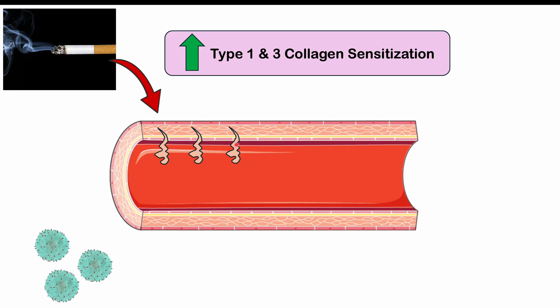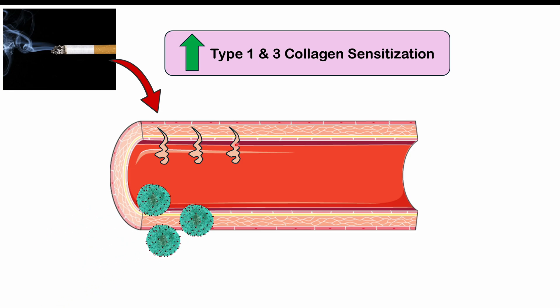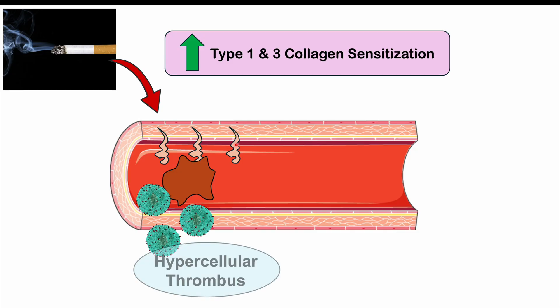In Buerger's disease, this endothelial damage is going to lead to an immune response. We're going to get a recruitment of T cells and other immune cells coming into the area and causing inflammation. This is all going to lead to a thrombus forming — a clot. These clots are not normal; they're going to be a large ball of cells, what we call hypercellular thrombi, composed of multinucleated giant cells and other cell types.